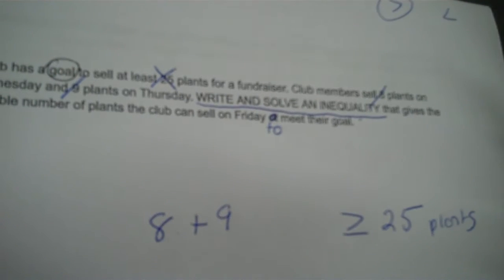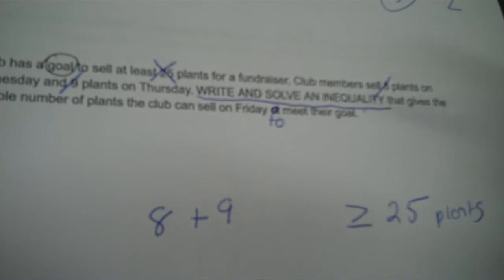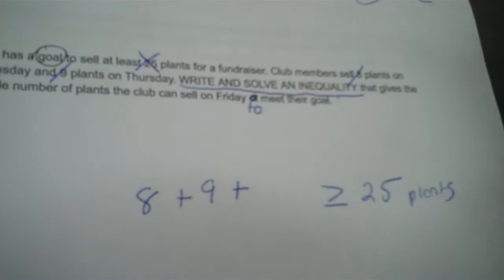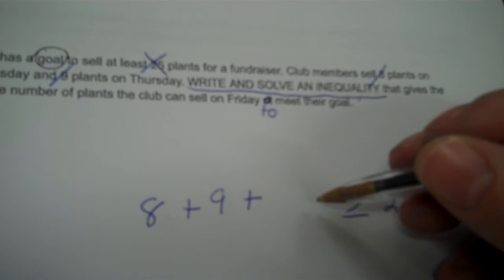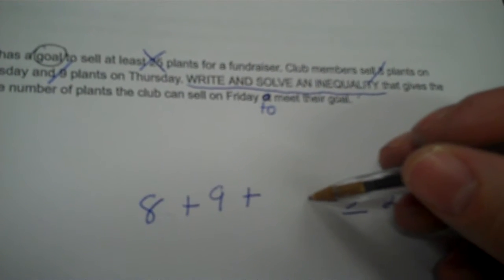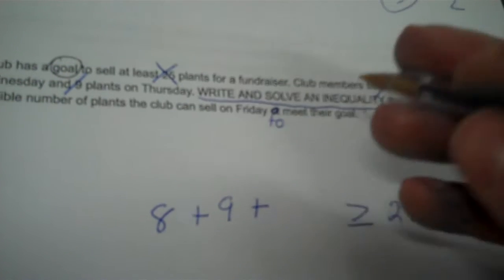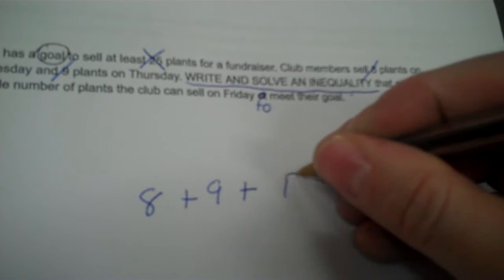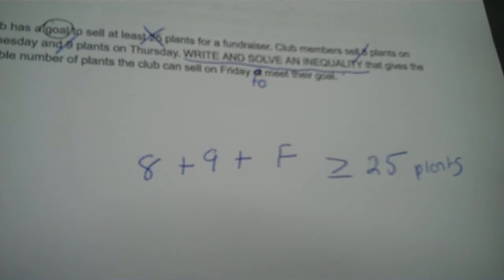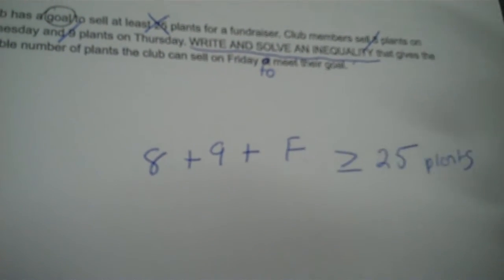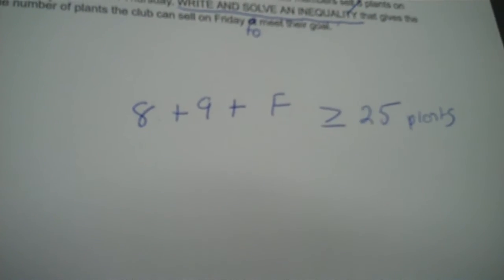There's another day, so we add a third amount which we don't know. You can use any variable you want — you can use X if you're comfortable with that, or I'm going to use F for Friday, because that's what they're asking. If you want to use X instead, that's fine. It does the same thing.